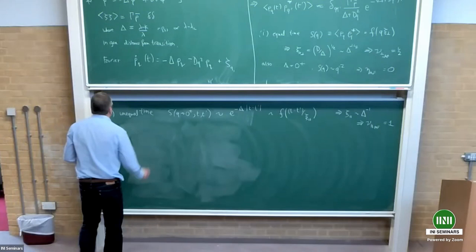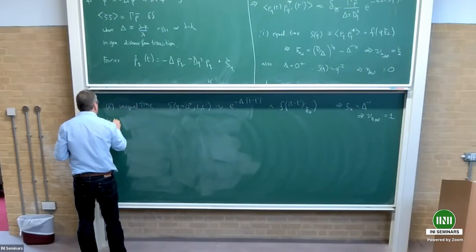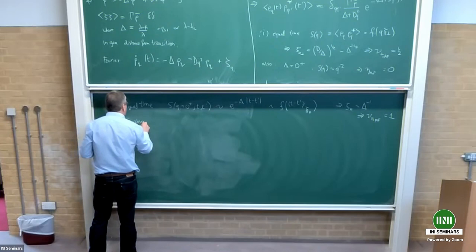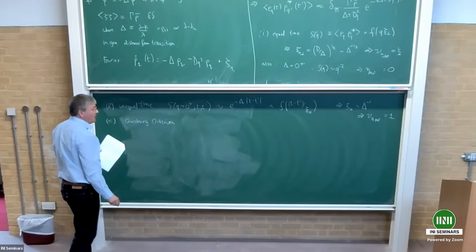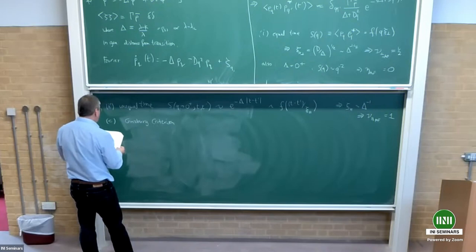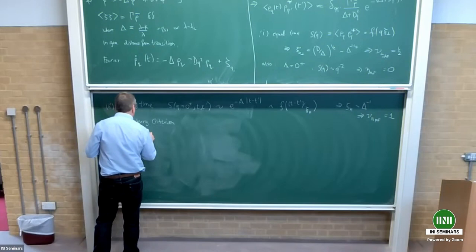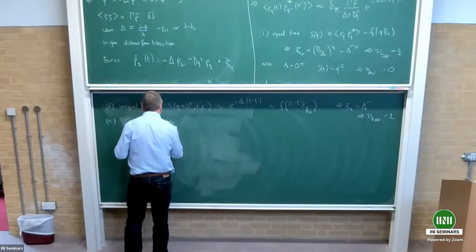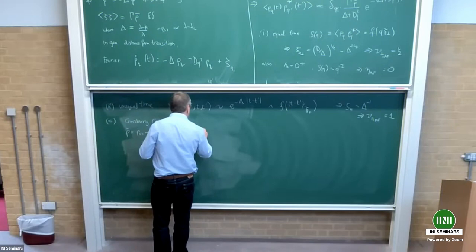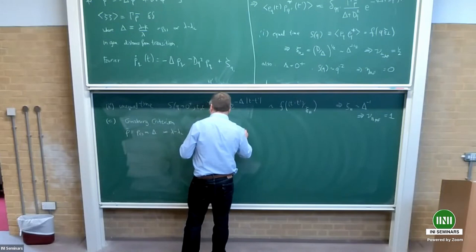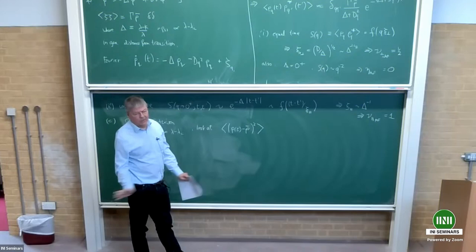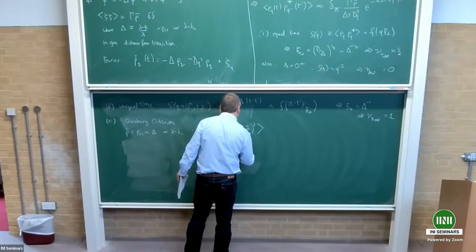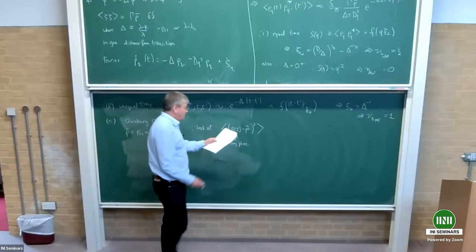This question is addressed by the Ginzburg criterion, originally developed for equilibrium transitions but equally applicable here. I have rho_bar proportional to delta to the first power — that's my beta=1. What I look at now is langle (rho(r) minus rho_bar)^2 rangle — the variance in the density at a point r. The system is translation invariant so I can choose any place, and this is proportional to an integral involving S(Q).